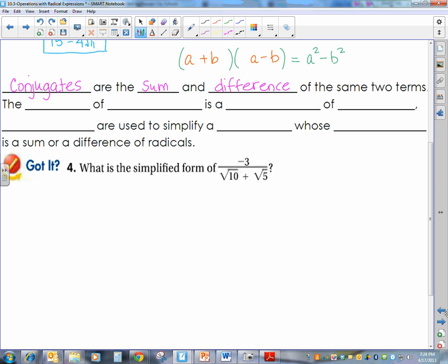Well, what we just showed mathematically, this is how we write it in English, is that the product of conjugates is a difference of squares. The product, because we multiplied, of conjugates, these two are conjugates, is the difference, because I'm subtracting, of squares, because both of them are squares.